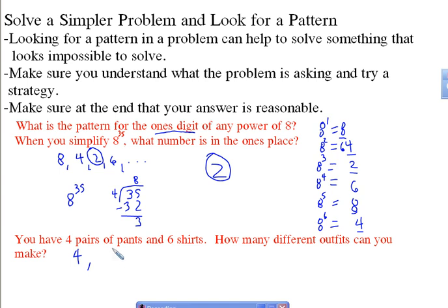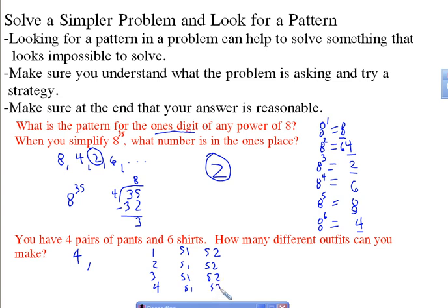How about if I have 4 pairs of pants and 2 shirts? Let's name them: pants 1, 2, 3, 4 and 2 shirts. Each pair of pants can go with shirt 1 or shirt 2, giving combinations: 1, 2, 3, 4, 5, 6, 7, 8 outfits. So you start to see a pattern: with 1 shirt you get 4 outfits, with 2 shirts you get 8 outfits. So you'll be able to figure out that with 6 shirts it's 4 times 6, which is going to be 24.